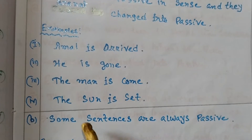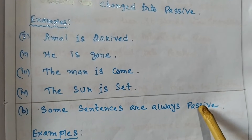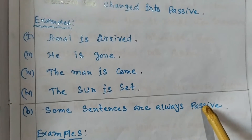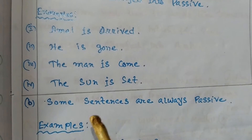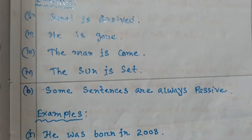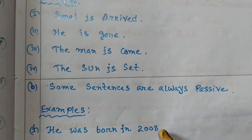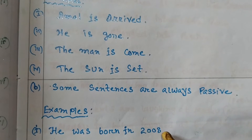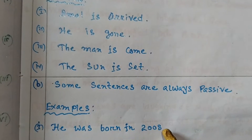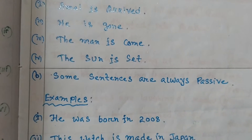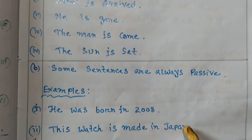Number B: some sentences are always passive — passive in form. Examples — Number 1: He was born in 2008. Number 2: This watch is made in Japan.